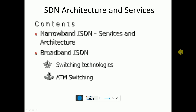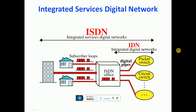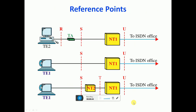This chapter covers narrow band ISDN services and architecture, broadband ISDN, switching technology, and ATM switching. Integrated Service Digital Networking — ISDN — involves packet switching and circuit switching, with digital pipelines giving connectivity to subscriber loops at homes, residences, and offices.